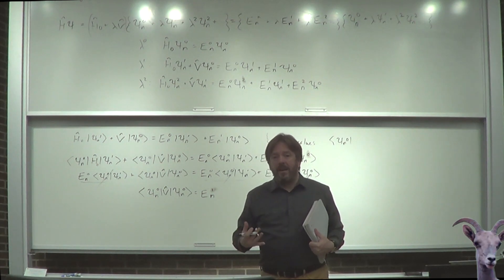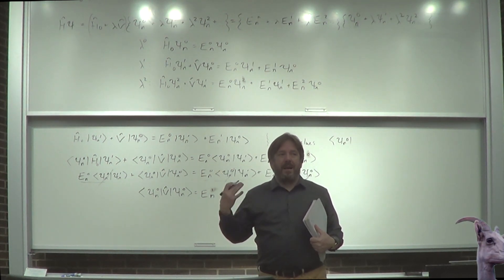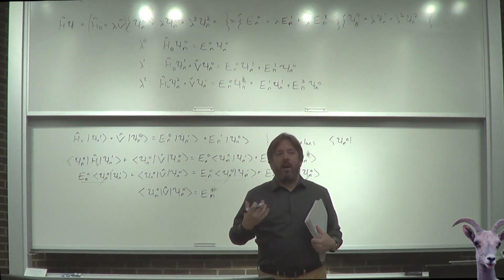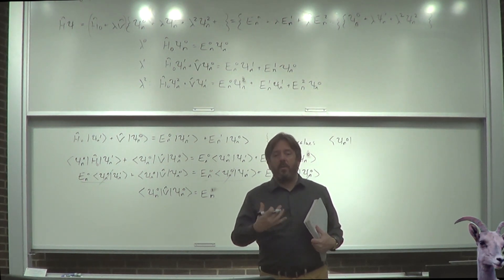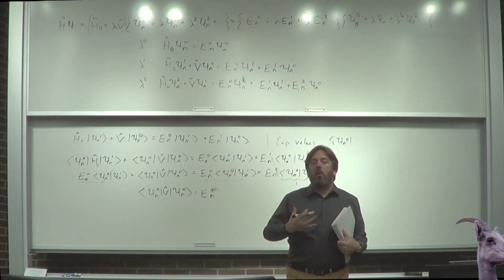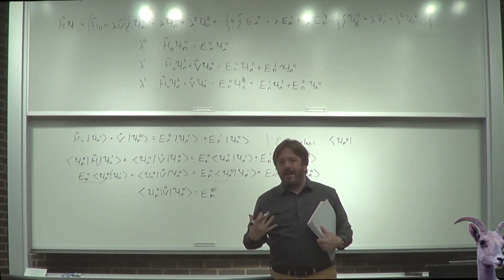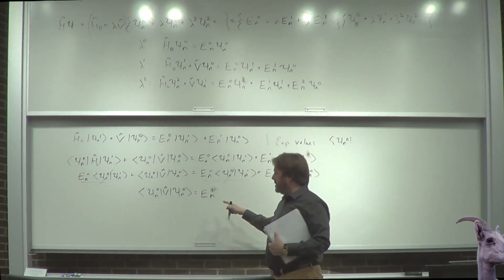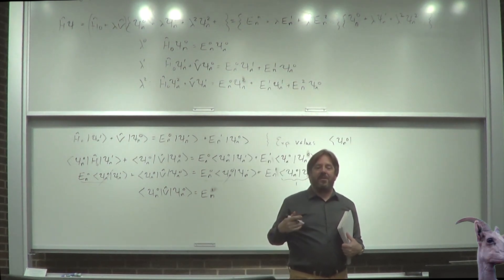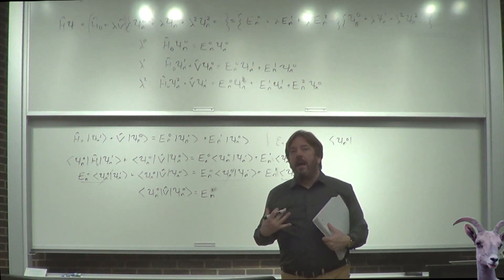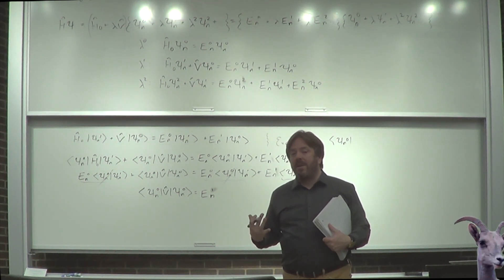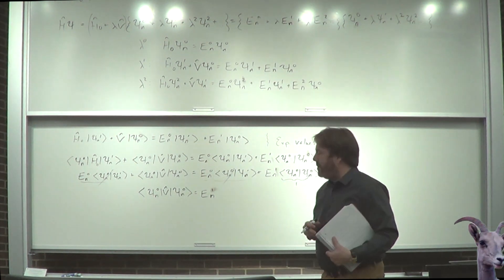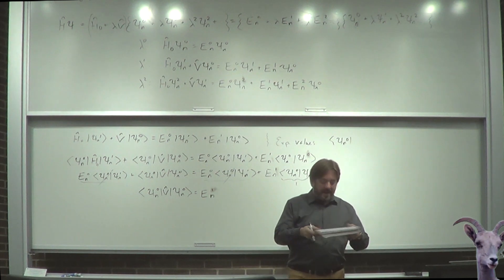Without the perturbation you know the Hamiltonian, wave functions, and energies — but with the perturbation that's no longer right. The first-order correction won't completely solve it; of the total error you want to capture, this fixes a large portion but not 100%, so you'd need to go to second order, third order, and in principle infinite order for a perfect solution. For now, the first-order correction is what we'll focus on — you'll see exactly how much it fixes when we do the example.